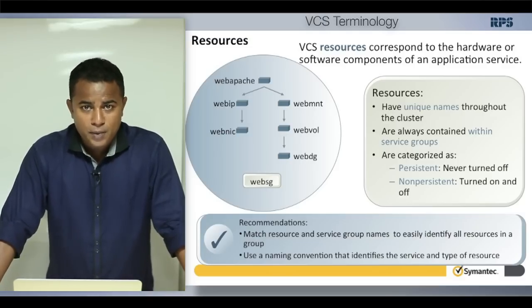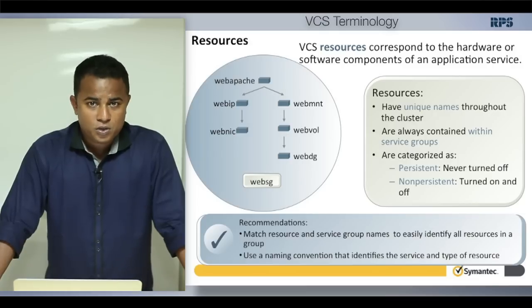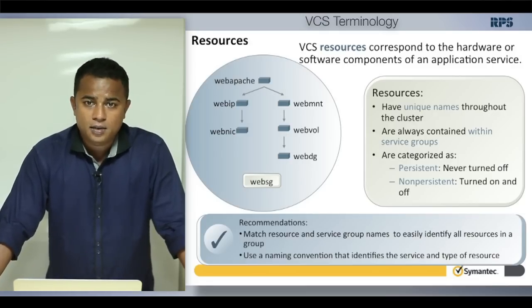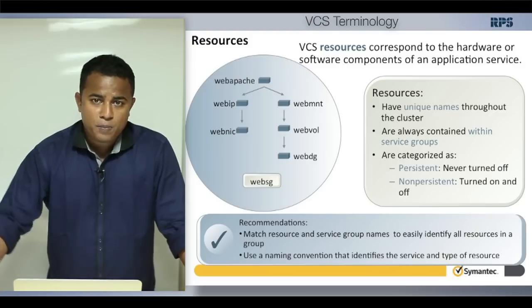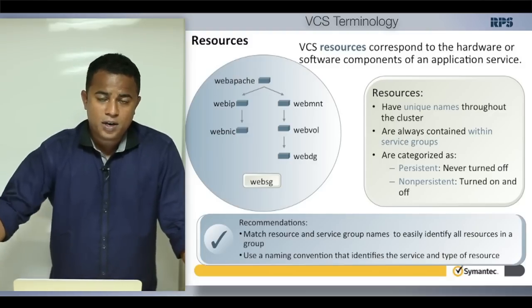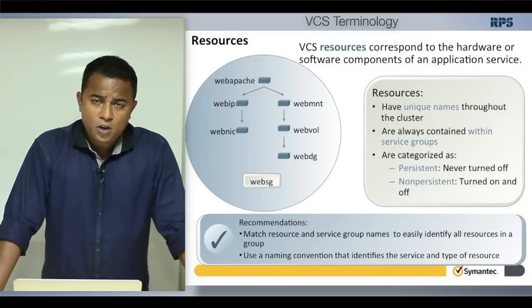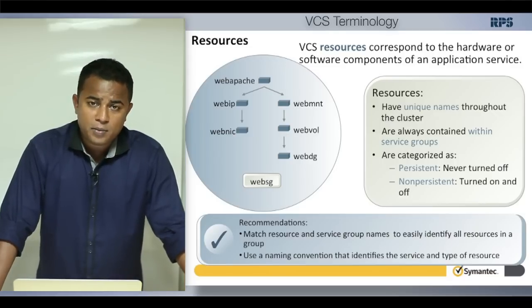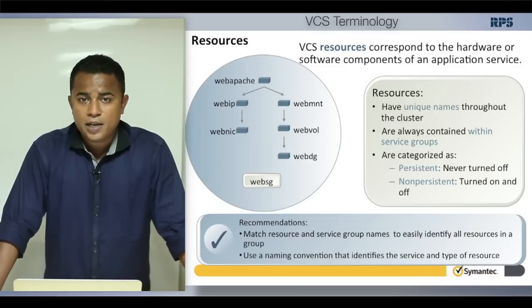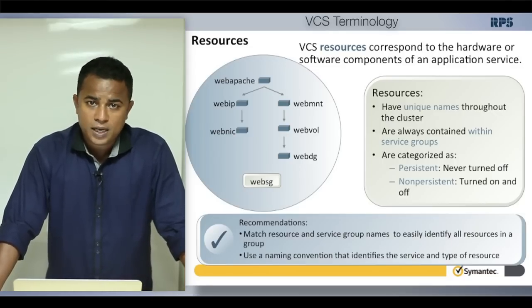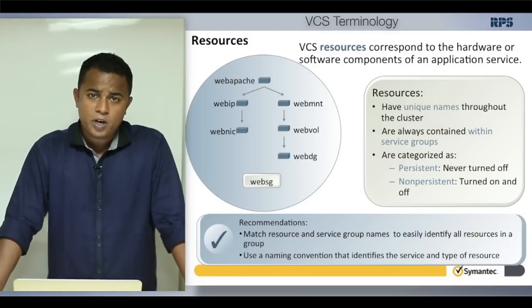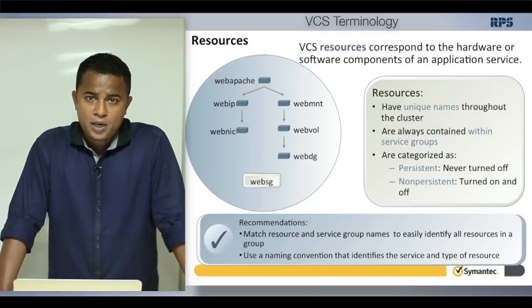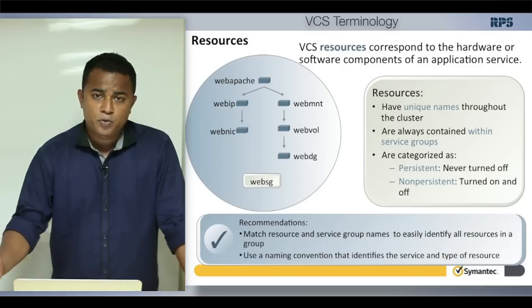Rather than naming resources res1 or res2, name them properly — for example, ORA_DG, ORA_NIC, or ORA_IP — so you can identify the resource type. If you have multiple instances of the same resource, add instance numbers like ORA_MNT1 or ORA_MNT2. Giving a proper name makes troubleshooting and management much easier.